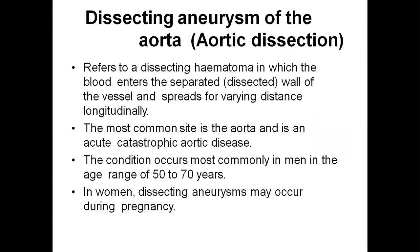The next type is the dissecting aneurysm of the aorta — aortic dissection. It refers to a dissecting hematoma in which blood enters the separated wall of the vessel and spreads by varying distances longitudinally. The blood oozes into that channel, creating a pulsating type of aneurysm.